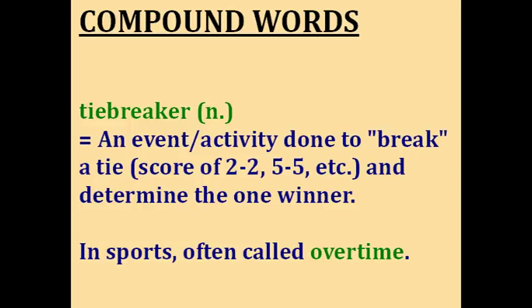Tiebreaker. When two teams are playing and the score ends in an equal number like 2 to 2 or 5 to 5, this is called a tie. But in many games and contests, we need one winner. So an extra activity called a tiebreaker is done to break the tie and determine the champion. In sports like soccer and basketball, this is often called overtime.